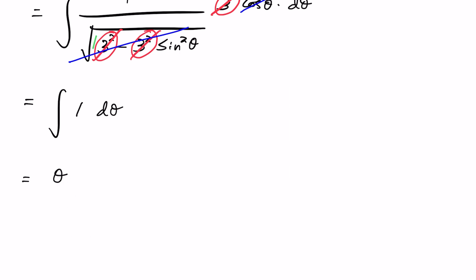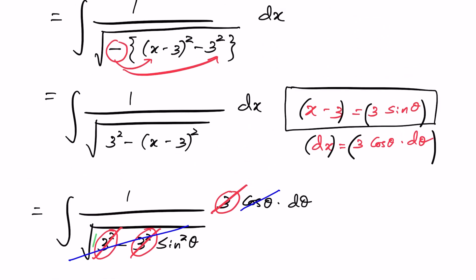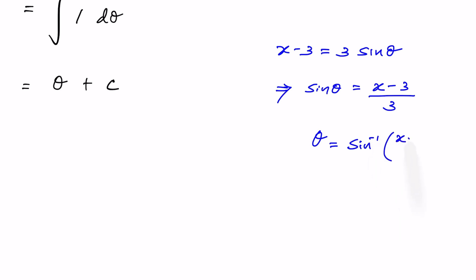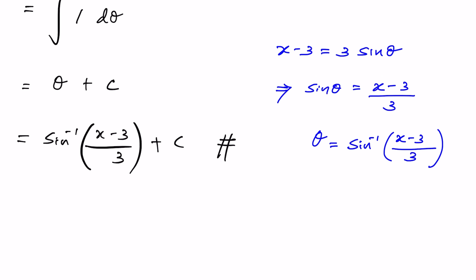The integral of 1 dθ equals θ + C, where C is an arbitrary constant. Since θ was introduced by substitution, we convert back to x. From x − 3 = 3 sin θ we get sin θ = (x − 3)/3, so θ = sin⁻¹((x − 3)/3). Therefore the final answer is sin⁻¹((x − 3)/3) + C. That's the complete answer for this example.